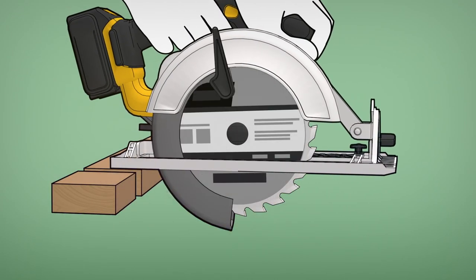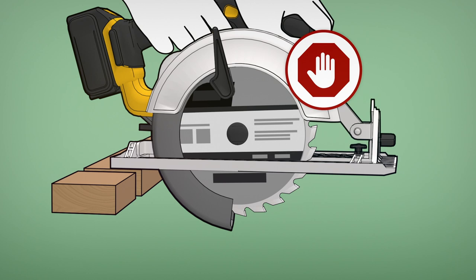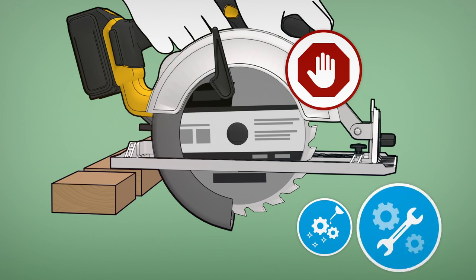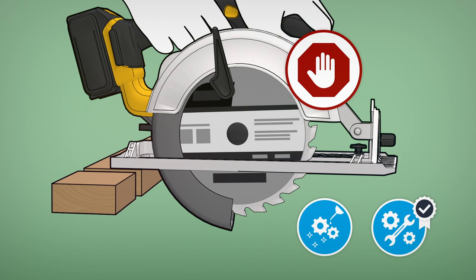Put the saw aside and stop using it if the guard isn't working properly, even just a little. And if regular maintenance doesn't fix the problem, have your saw serviced by a qualified repair person that is recognized by the manufacturer.